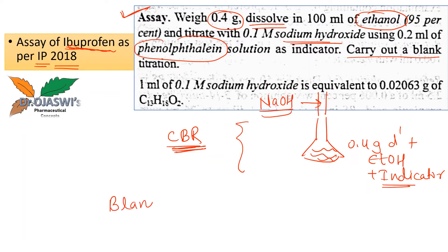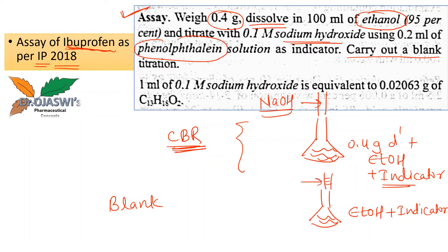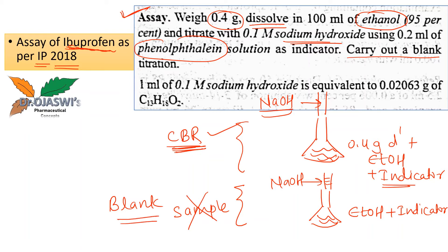For the blank titration, a conical flask is taken without the drug. All other chemicals, solvents, and reagents used in the assay procedure are added — ethanol and the indicator — and this solution is titrated with NaOH in exactly the same manner as the assay procedure. This is called blank titration, where the sample whose assay is being performed is not included in the conical flask.